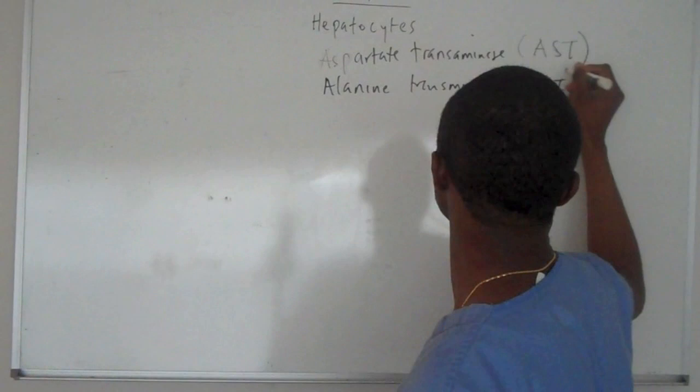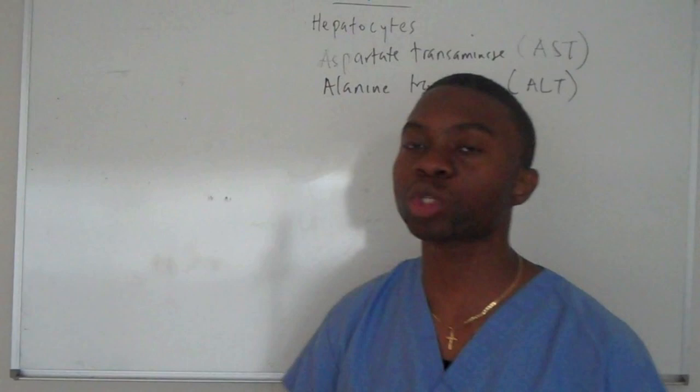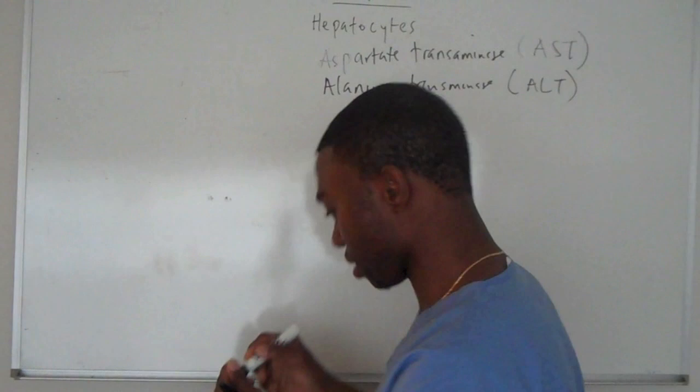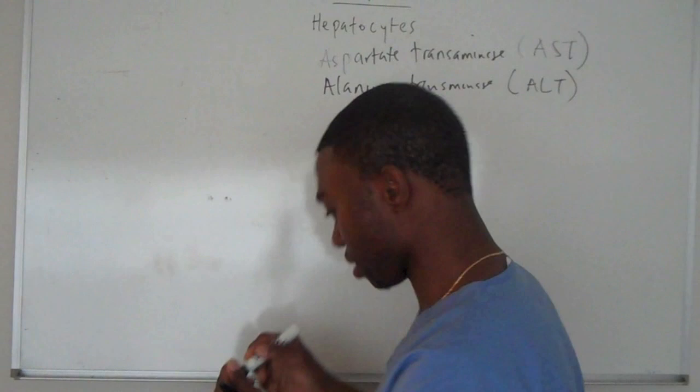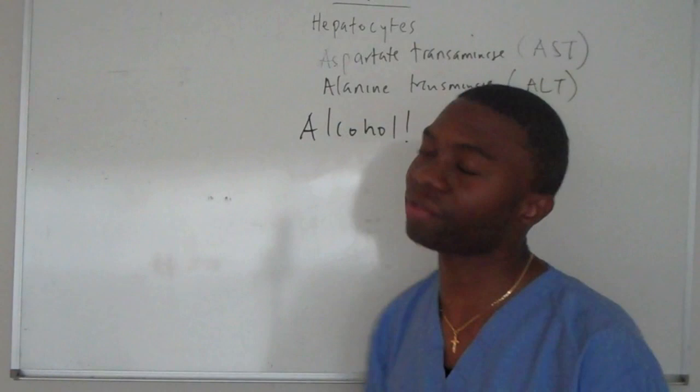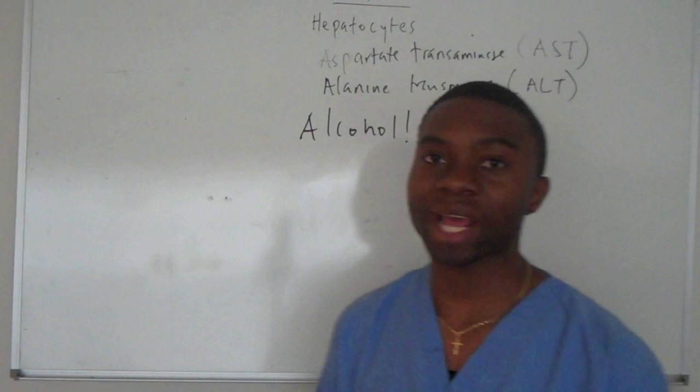Now, the first thing we're going to talk about is what can make these guys go up? So the most common cause in the United States, the most common cause of liver damage, is what? Guess what it is. Oh man. Probably did this last night. It's alcohol, buddy. It's alcohol. Alcohol is the most common cause of liver damage. But you have to drink a lot of alcohol for a very extensive amount of time to actually cause a lot of damage. And there will be another chapter that I'll actually dedicate on how alcohol actually causes liver damage.